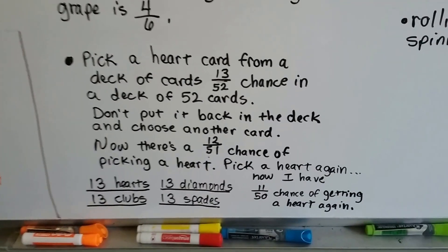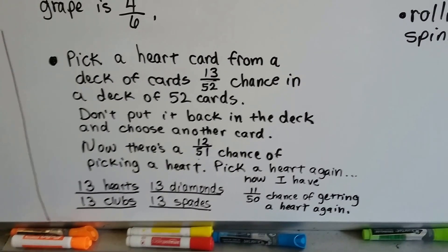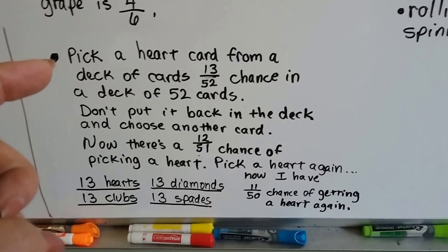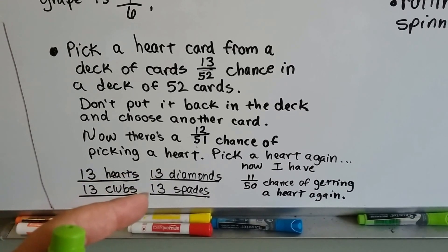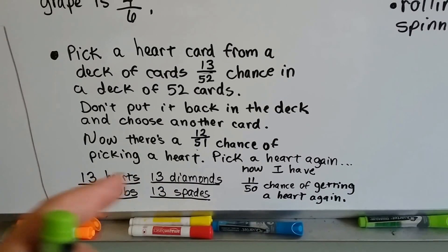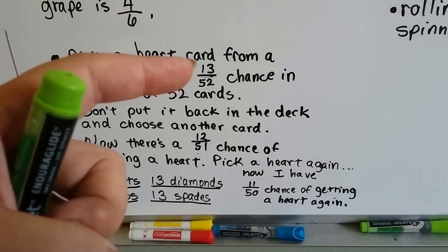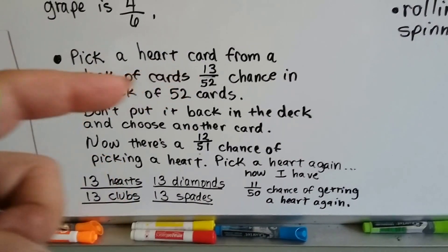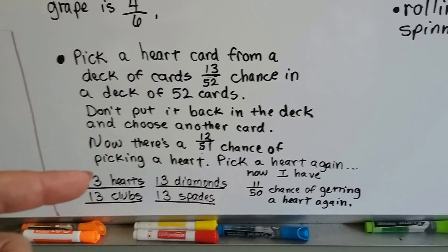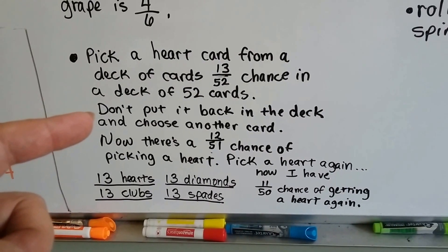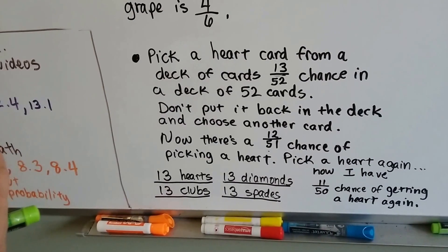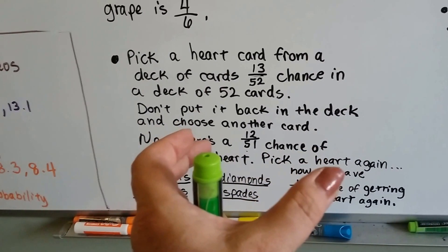So let's say I have a deck of 52 cards. I want to pick a heart card from the deck of cards. Now because there's 13 hearts, 13 clubs, 13 diamonds, and 13 spades, that makes the 52 cards. I've got a 13 out of 52 chance of getting a heart card. Let's say I don't put the heart card back. Let's say I put it off to the side on the table and I pick another card from the deck.